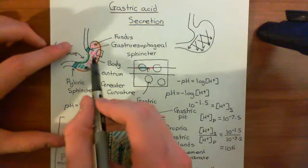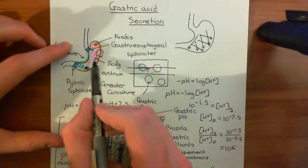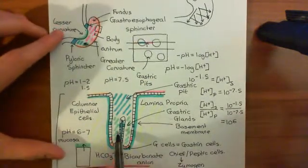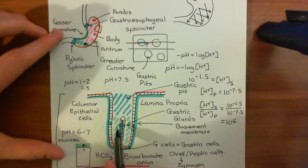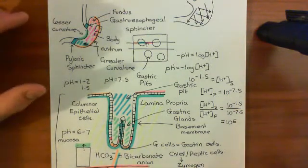In the body of the stomach, the wall will have gastric pits which will have gastric glands coming off them. In these gastric glands you will have parietal cells, and these parietal cells will be secreting gastric acid. What we now want to look at is how do they secrete gastric acid — how do they secrete hydrochloric acid?